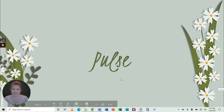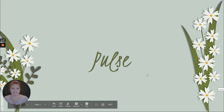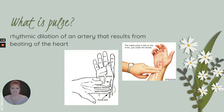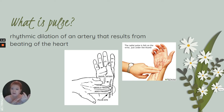We're in the cardiovascular system, and we're talking today about pulse. So what is pulse? Pulse is the rhythmic dilation of an artery that results from the beating of the heart. You wouldn't have a pulse in any of your arteries if your heart weren't beating — your heart beating is a prerequisite or requirement in order to feel your pulse.